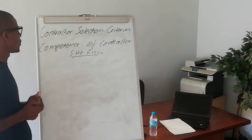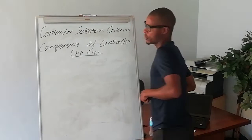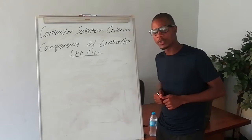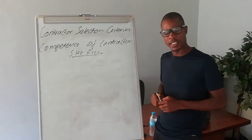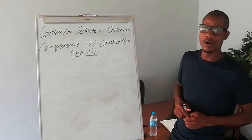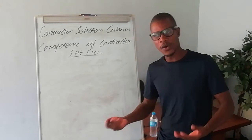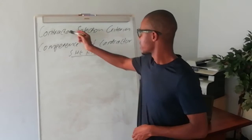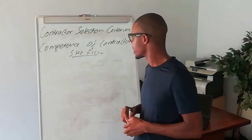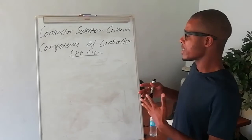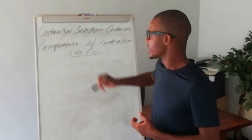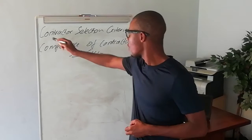Good day team. Today we are going to discuss the contractor selection criteria, or the competency of a contractor. This applies to those who are doing IGC or ICC — that is the International General Certificate or the National Construction Certificate. There is a section which talks about contractor selection criteria or competency of a contractor, and the tricky part is that contractor selection criteria is found in Module 1 of IGC.